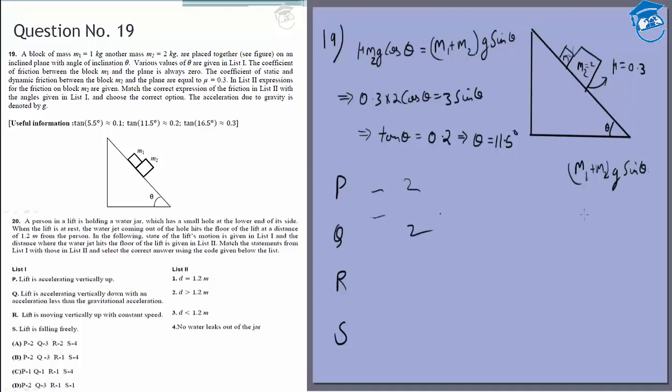For R and S with slipping, friction will just be μN even if that can't cover the total force, so friction is μ m2 g cos θ, which is option 3. Therefore, P and Q get option 2, R and S get option 3, making the answer D.